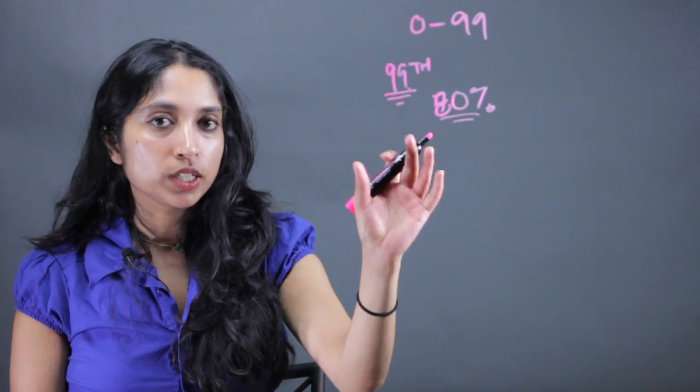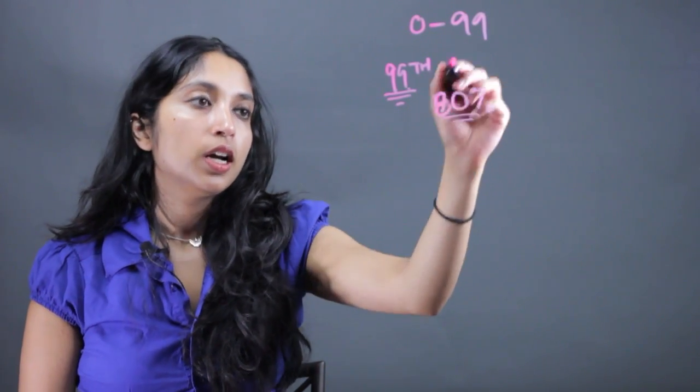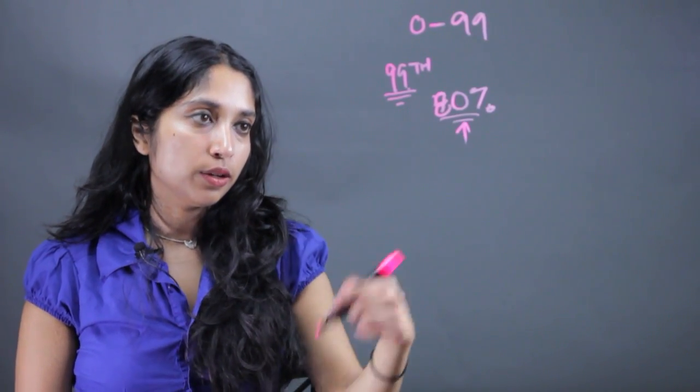It's the percentage of observations in a specific set of data that are less than a particular value, like a test score.